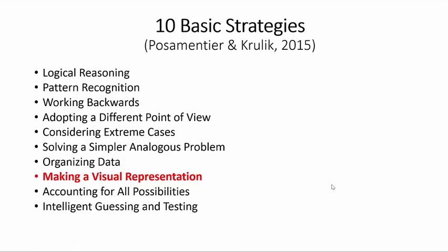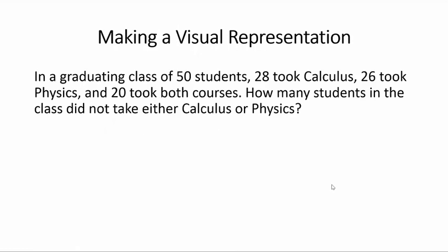Let us look now at making a visual representation. In the graduating class of 50 students, 28 took calculus, 26 took physics, and 20 took both courses. How many students in the class did not take either calculus or physics?